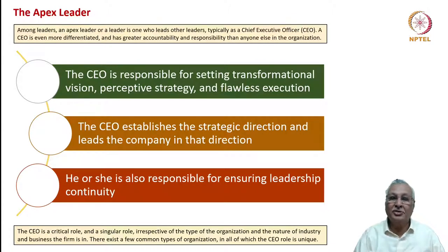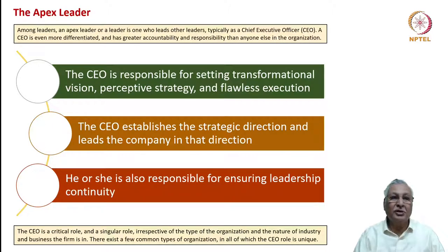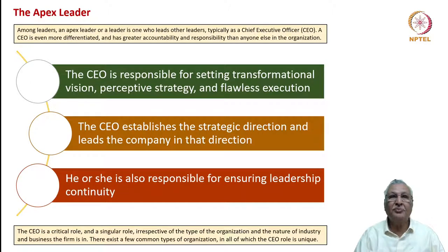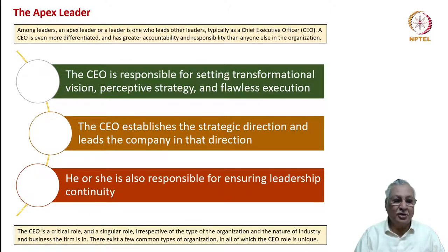An apex leader is one who leads other leaders, typically as a Chief Executive Officer. A CEO is an even more differentiated leader compared to various other leaders in an organization, having greater accountability and greater responsibility than anyone else. The three critical functions of a CEO are setting transformational vision, perceptive strategy, and flawless execution. The CEO also ensures leadership continuity.